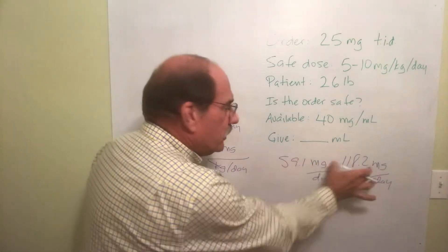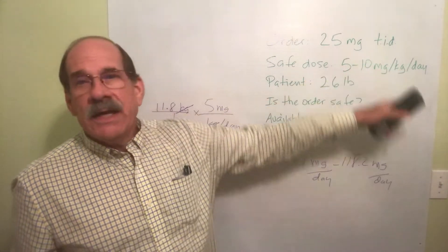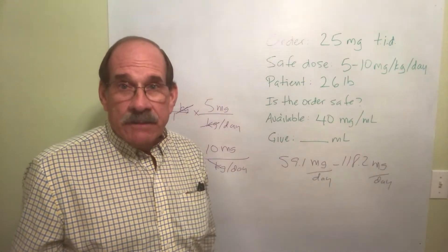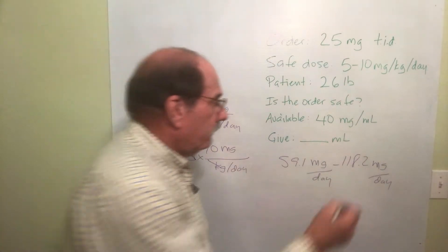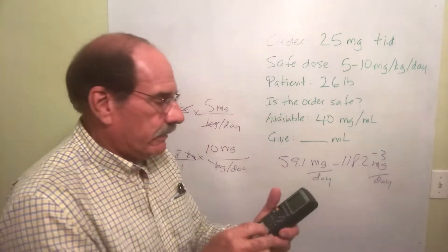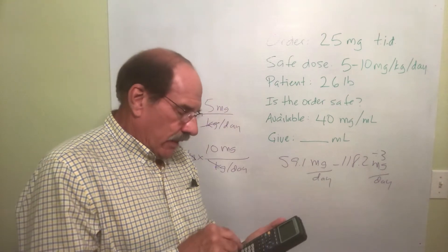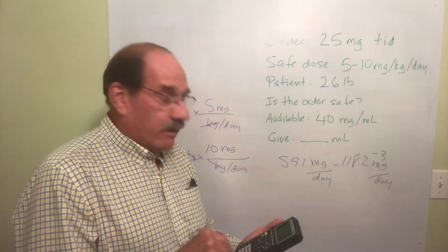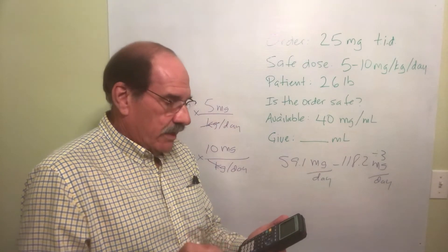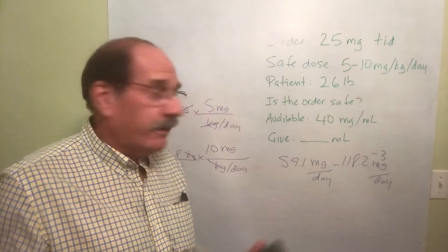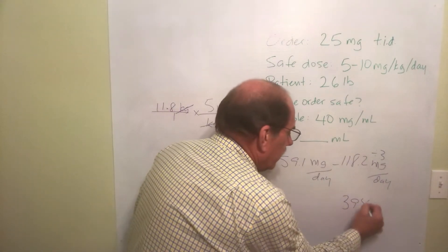TID means three times a day, so I take each number separately and divide by three. Dividing the upper limit (118.2 mg/day) by 3 gives approximately 39.4 milligrams per dose. There was a small calculator hiccup, but the result is about 39.4 mg. It's better to use the full unrounded number in the calculator rather than a rounded-off version.